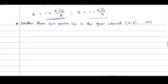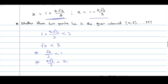Let us check one by one. First, 1 + (2√3)/3 is a positive real number, so it is definitely greater than 0. It remains to check whether it is less than 3. We know √3 < 3, which implies √3/3 < 1, and multiplying by 2 gives (2√3)/3 < 2. Adding 1 to both sides: 1 + (2√3)/3 < 3. So this point lies inside [0, 3].